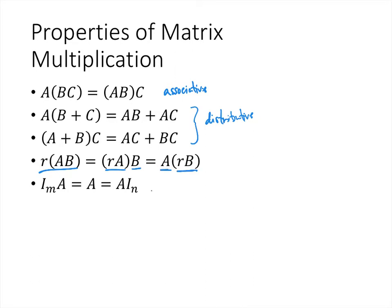The last property talks about a multiplicative identity. We talked about how the zero matrix is an additive identity for matrices, but the identity matrix I is a multiplicative identity. Notice that it's I_M if we multiply on the left, but I_N if we multiply on the right, assuming A is an M by N matrix. This is because for matrix multiplication to be defined, the number of columns of the first matrix has to equal the number of rows of the second matrix.